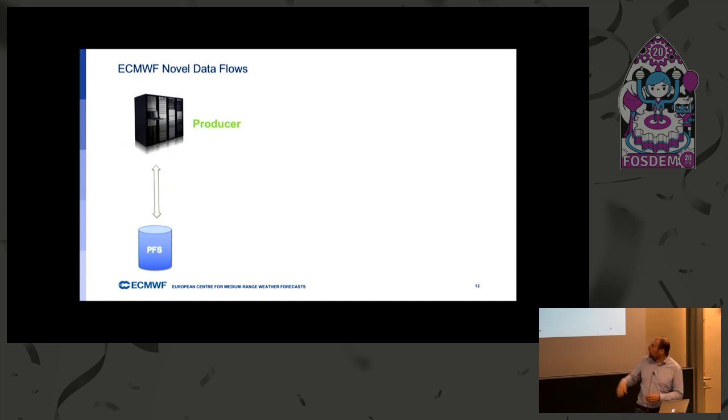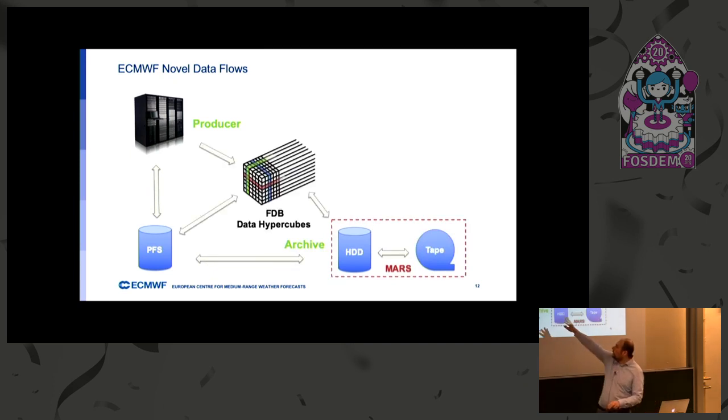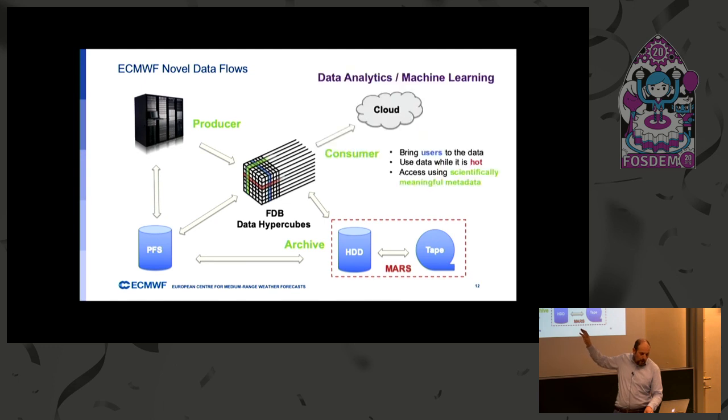Okay. The idea is that we produce the data, we store on the parallel file system, and then we archive on the tapes. With FDB, all the process has been modified. So the object store is taking care of all the I.O. and then is forwarding the data to the parallel file system and to the archive. And eventually, we will provide also a cloud consumer that is really interesting for accessing the data and performing computation close to them.